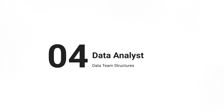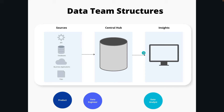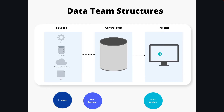Next is the data analyst. The data analyst sits in between the data architecture — the central hub and all the technical aspects — and the insights being sent to stakeholders, business users, or external users. They bridge the gap between technical and business users, communicating requests back to the engineers to make sure what's being delivered from the central hub meets the needs of the business. They're also technical enough to create reports, dashboards, write queries, and possibly use tools like dbt to generate custom models and data for analysis.